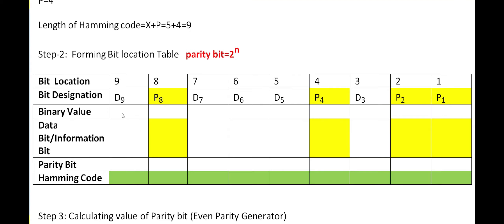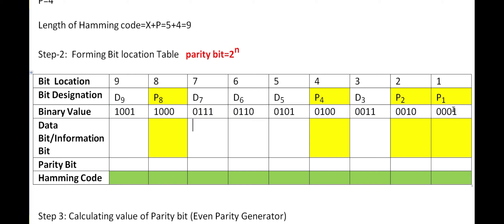Next, we write the binary value for each bit location. Since the maximum position is 9, we need 4 bits to represent it — the binary equivalent of 9 is 1001. Similarly, we write 4-bit binary values for positions 1 through 8. In the previous 7-bit problem, 3 bits were sufficient, but now 4 bits are needed. We write the binary values and fit the data bits into the table; the highlighted positions are the parity bits.